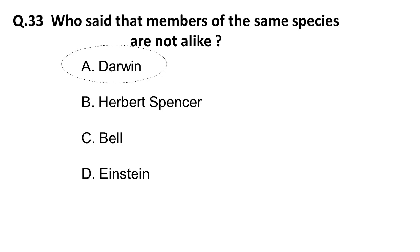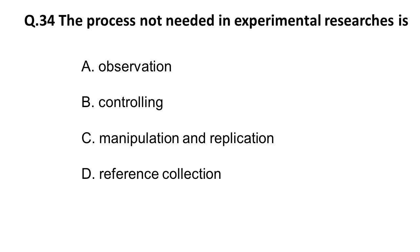Next question: the process not needed in experimental research is — options are observation, controlling, manipulation and replication, or reference collection. In experimental research the least required thing is reference collection, because in an experimental section you can rely on your own reproduced data and don't actually need to look for external references. The correct answer is reference collection.